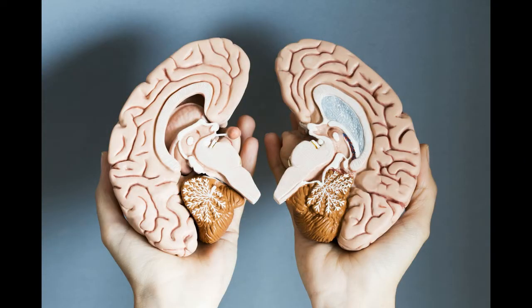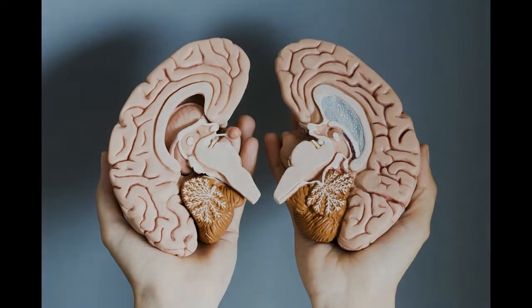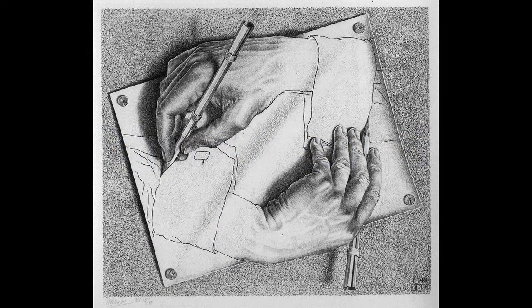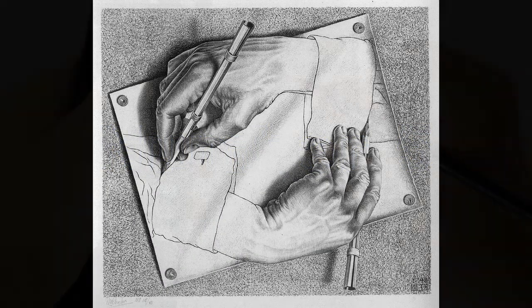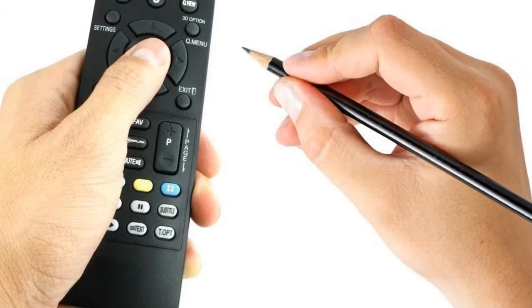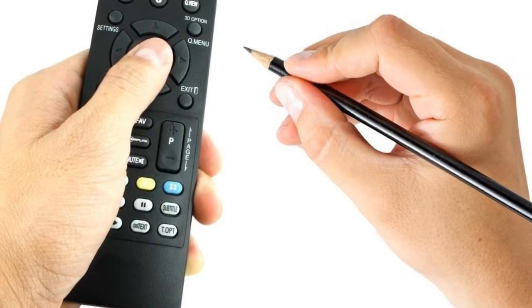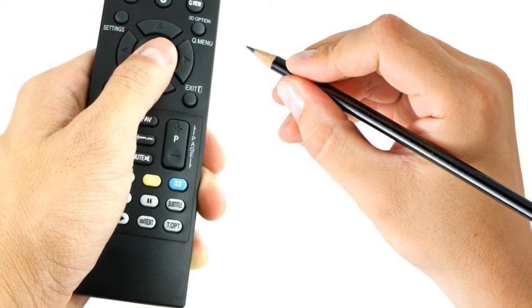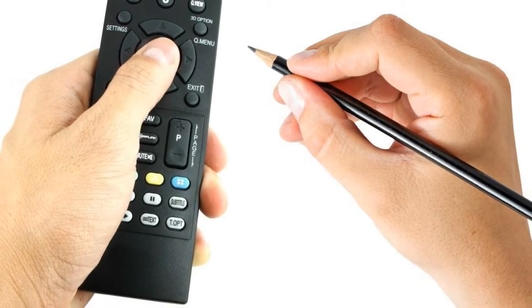5 Examples of Human Laterality. Number 5: Handedness. This is our most familiar term, so it will be our starting point.